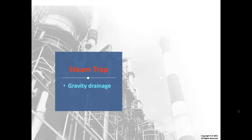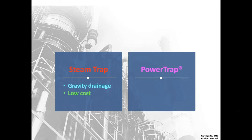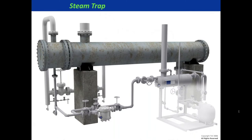One basic consideration is: should we use a steam trap? A steam trap relies on gravity drainage or positive pressure differential — that's the lowest cost option on a capital project and should be used whenever there's positive pressure differential. But when do we need to install a power trap, like a pump trap system, where we have to evacuate with secondary pressure? Here's one process to consider.